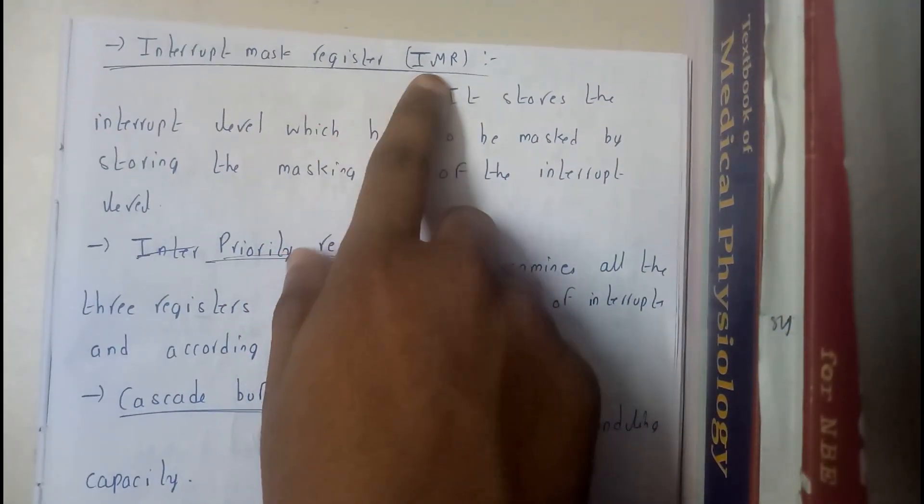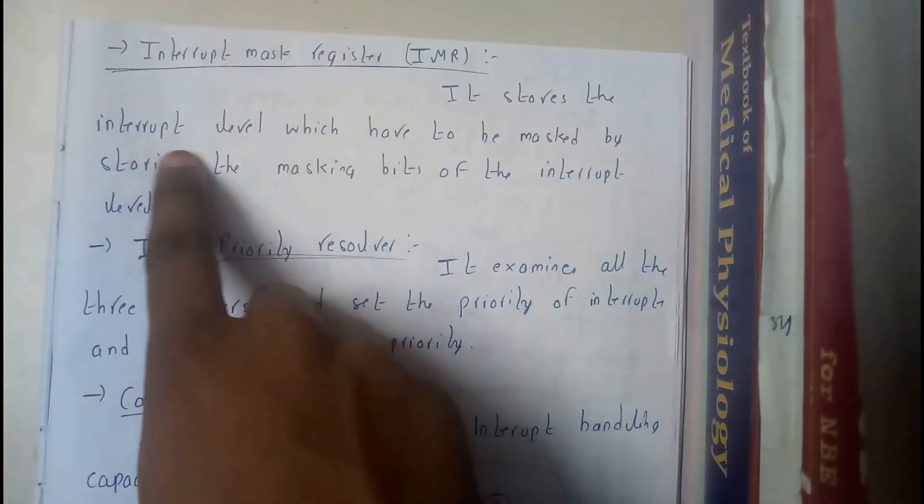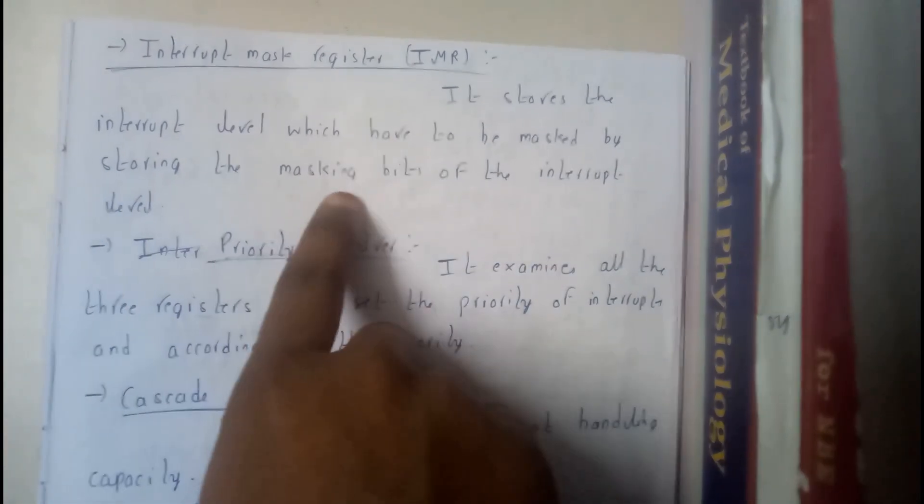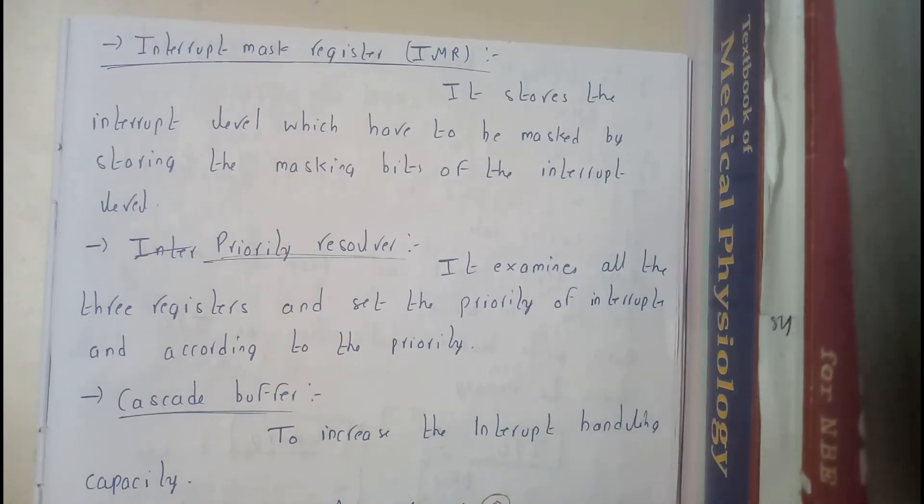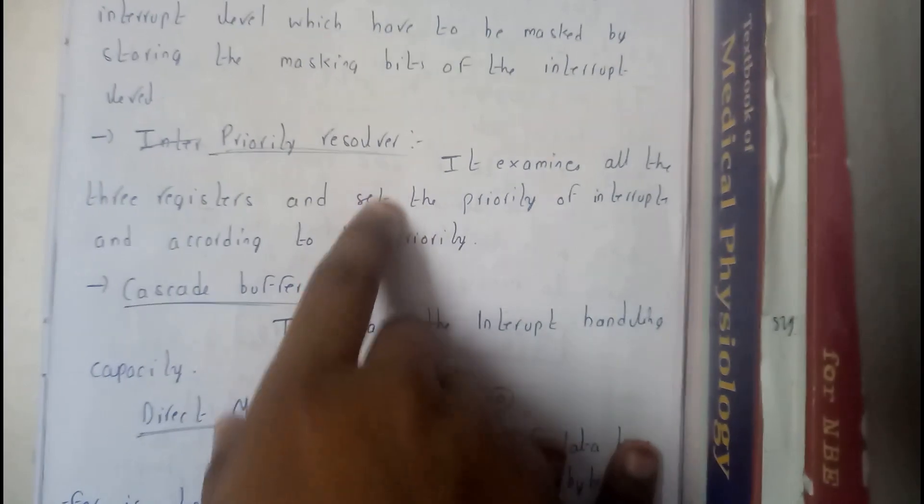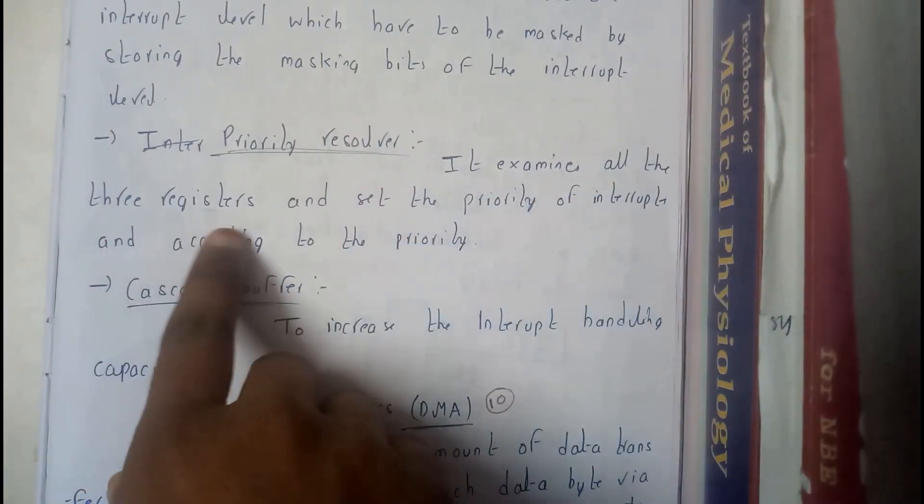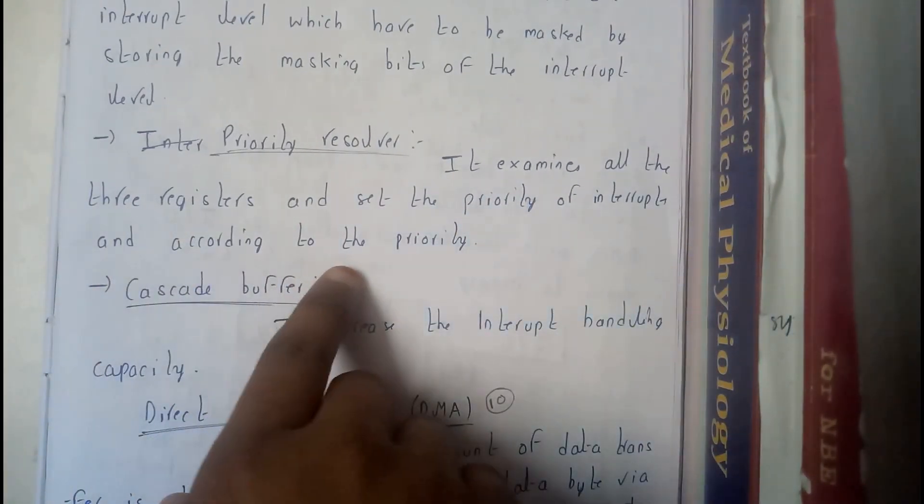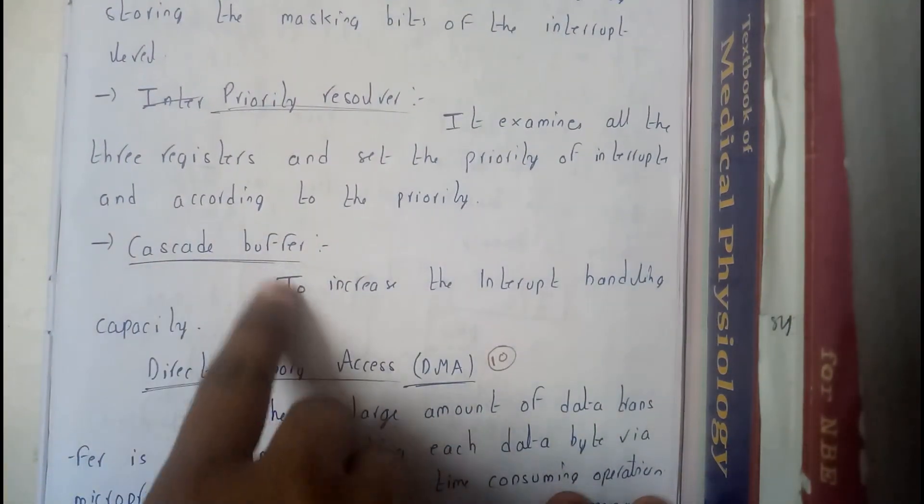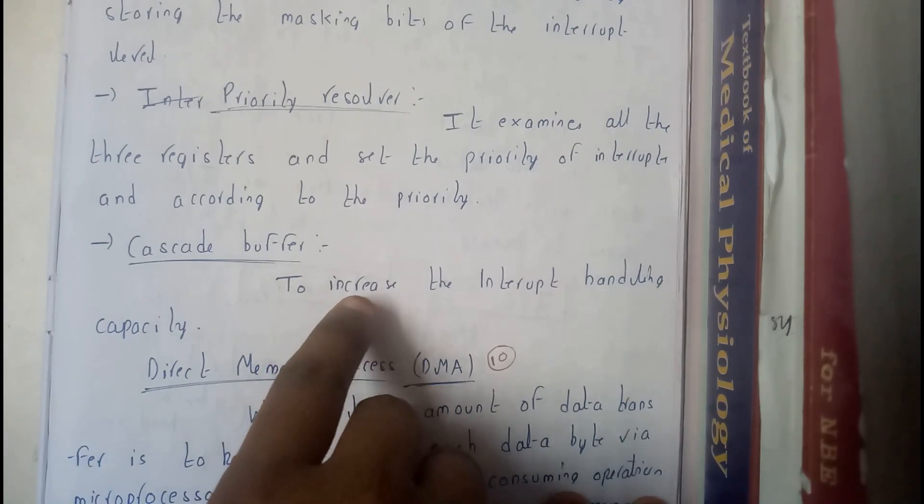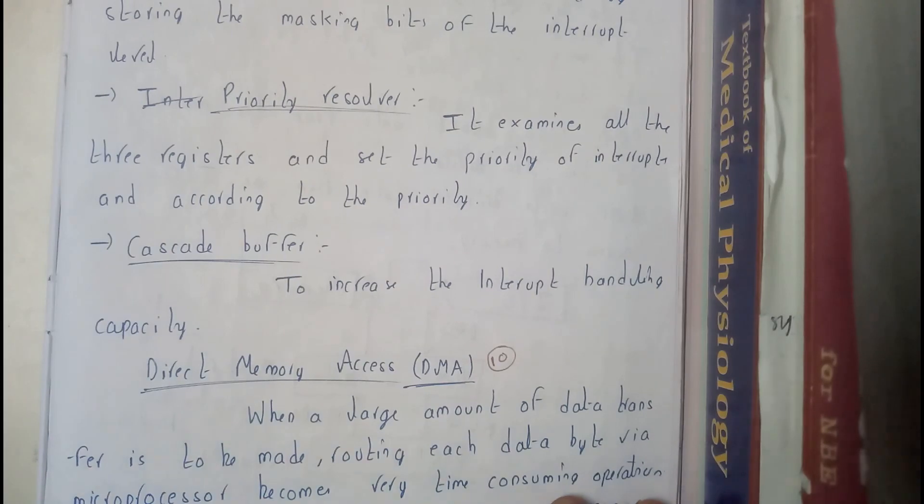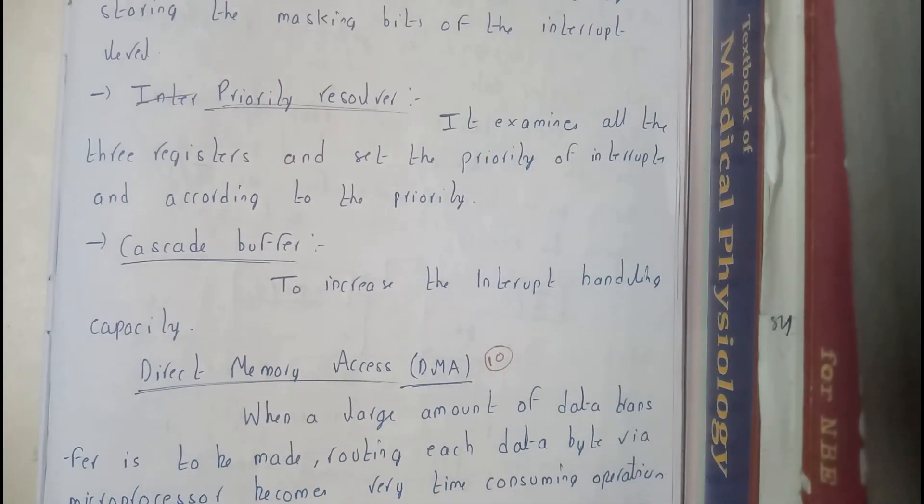Interrupt maskable register IMR - it stores the interrupt level which have to be masked by storing the maskable value of the interrupt. Priority resolver - it examines all the three registers and sets the priority of interrupt and according to its priority it's going to execute. Cascaded buffer - to increase the interrupt handling capacity we will be using the cascading buffer which makes the things faster.